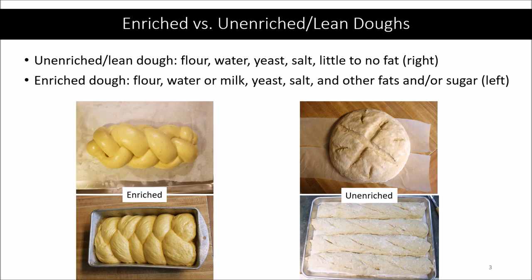We have two enriched doughs: on the top, challah — usually enriched with oil, eggs, and sugar — and on the bottom, brioche, which has a substantial amount of butter as well as eggs and sugar. These doughs are quite yellow from all the nice yellow fats they contain. On the right hand side we have two unenriched doughs: a basic white sourdough and a sourdough baguette, both quite pale and made with only flour, water, salt, and yeast. In comparison you can see differences in color, which also yields differences in texture, flavor, and gluten development.